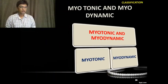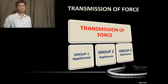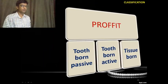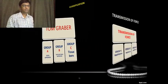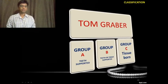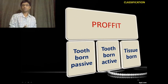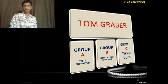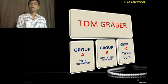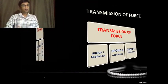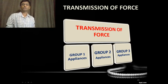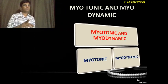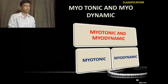To recap the classification: Proffitt says tooth-bone passive, tooth-bone active, and tissue-bone. Tom Graber says Group A — tooth-supported, Group B — tooth and tissue-supported, Group C — purely tissue-supported. Transmission of force: Group 1, Group 2, Group 3. And muscle-based: myotonic and myodynamic.